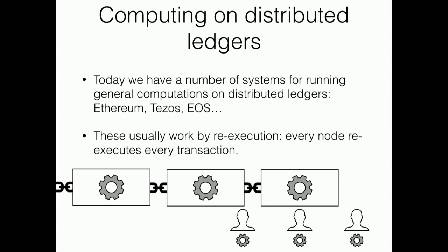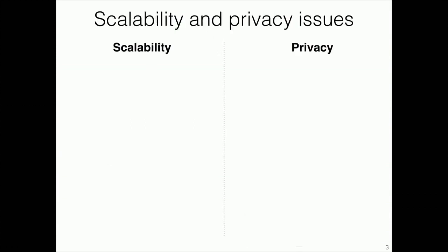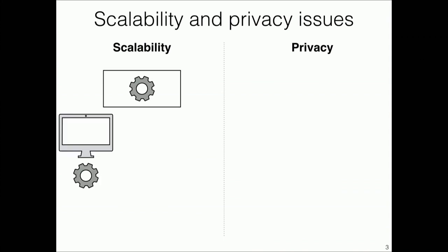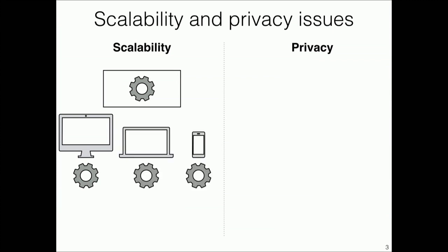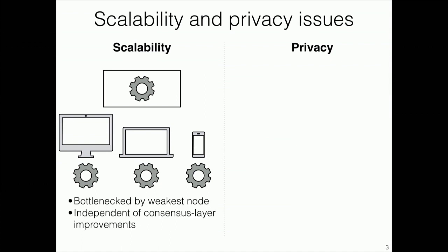This has implications for the scalability and privacy of the system. From the scalability perspective, your network probably contains nodes with different computing capabilities. If all of these nodes have to re-execute the same computation, then you're basically bottlenecked by the weakest node in your system — an issue which persists even with an ideal ledger and the best consensus mechanism in the world.